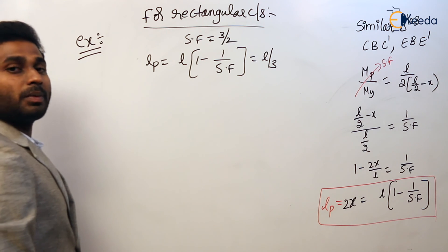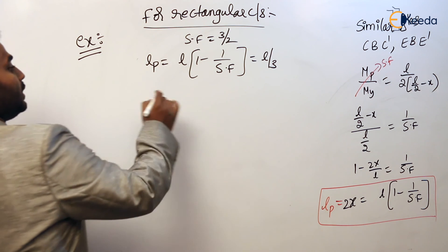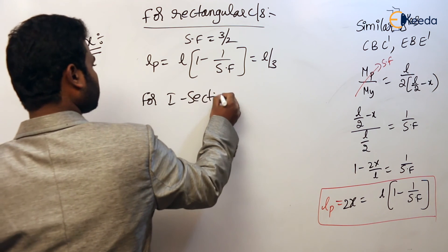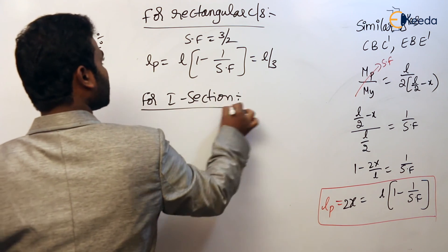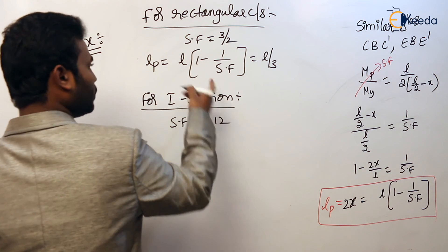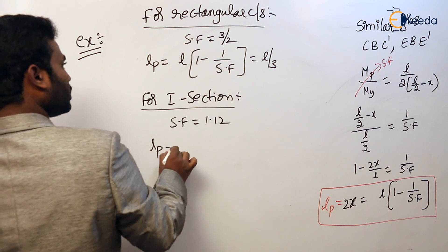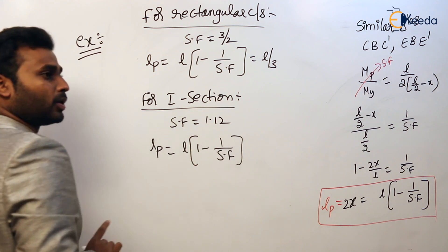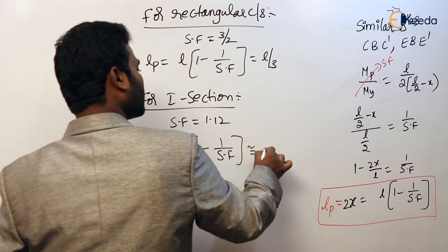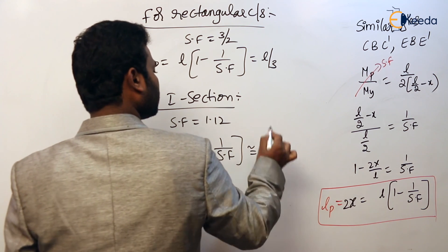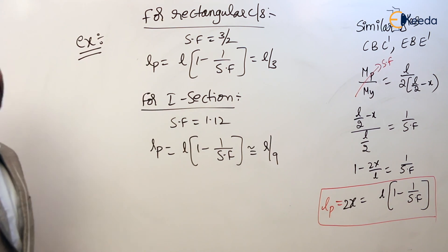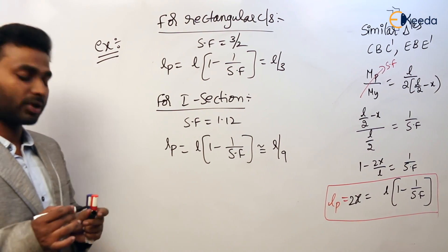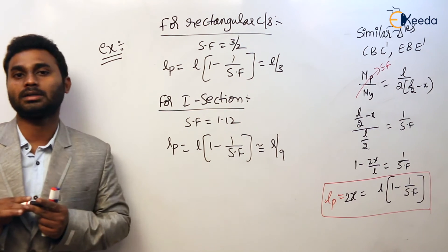So for a simply supported beam with center point load and rectangular cross section, the plastic hinge length is L/3. For the I-section, the shape factor is 1.12. Substituting: LP = L × (1 − 1/1.12), which simplifies to L/9. These are the plastic hinge length values for rectangular and I-section cross sections.